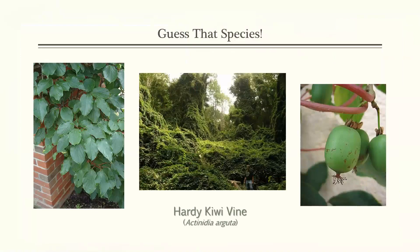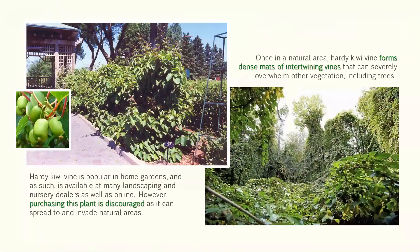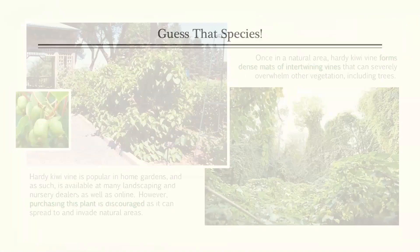Hardy kiwi vine is popular in home gardens and is still available at many landscaping and nursery dealers, but I would discourage planting it. Just like so many other species, it can spread and invade natural spaces. As seen in this picture from New England, it can completely take over entire landscapes, forming dense mats of intertwining vines that severely overwhelm other vegetation including trees. When there is no control in natural spaces, this is exactly what can happen.